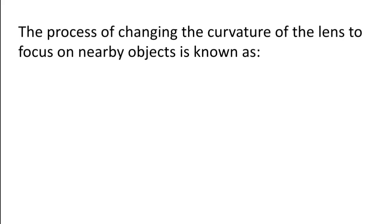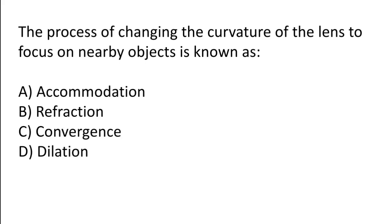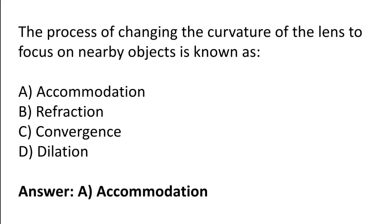The process of changing the curvature of the lens to focus on nearby objects is known as: accommodation, refraction, convergence, or dilation. The correct answer is option A — the process of changing the curvature of the lens to focus on nearby objects is known as accommodation.